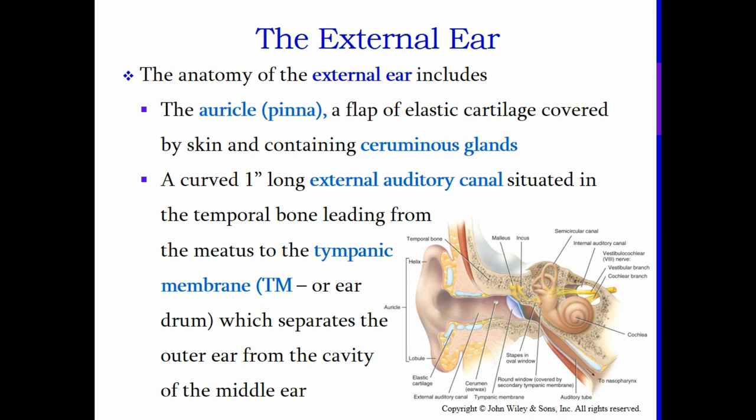The anatomy of the external ear includes the auricle or pinna — that flap of skin and cartilage on the outside of the head, which is a flap of elastic cartilage covered by skin and containing ceruminous glands that produce cerumen or ear wax. Your external ear has a curved, one-inch-long external auditory canal situated in the temporal bone, leading from the meatus to the tympanic membrane, also known as your eardrum.